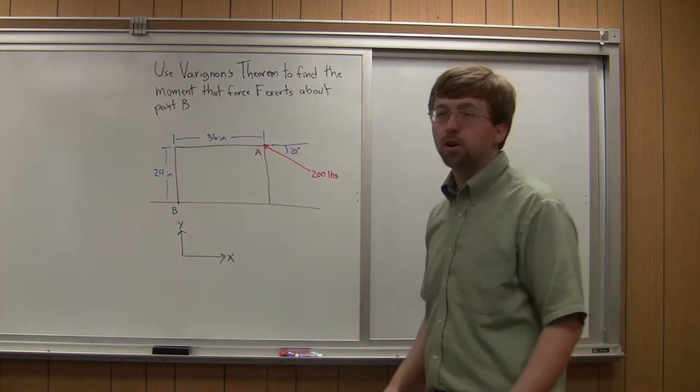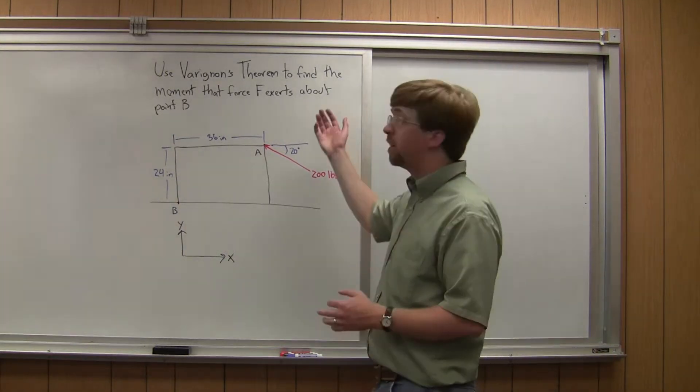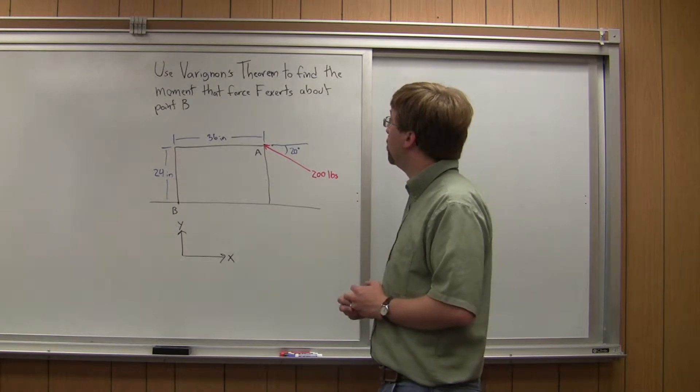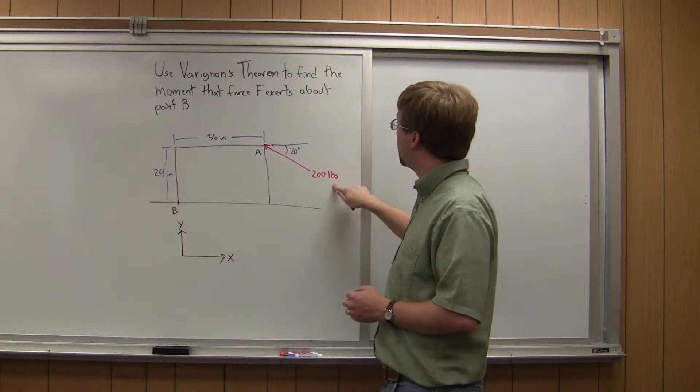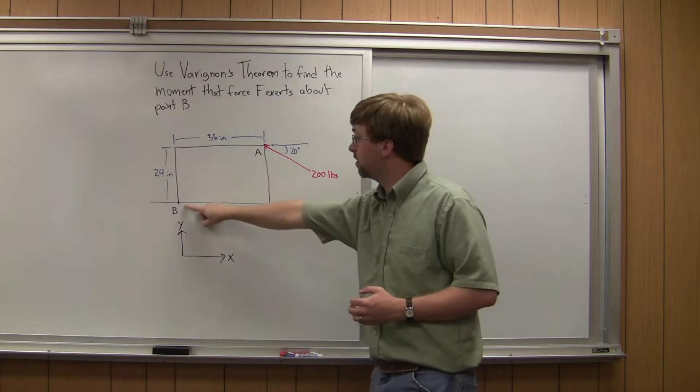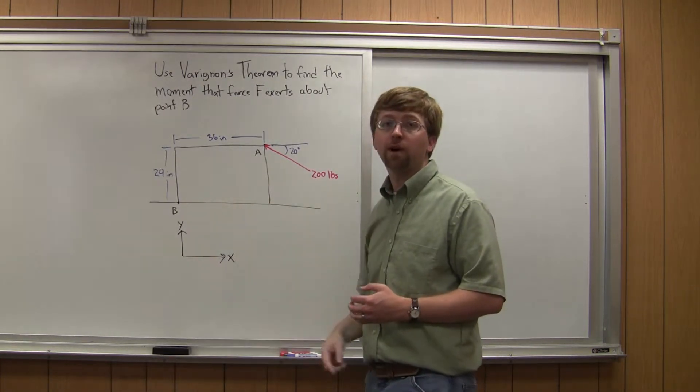Hello. So for this work problem, we're asked to use Varignon's Theorem to find the moment that force F, this 200-pound force over here, exerts about point B. Point B is on this bottom corner of the box right here.